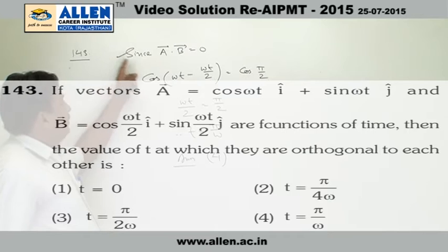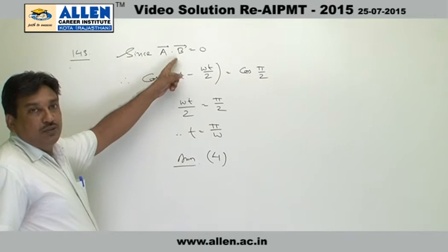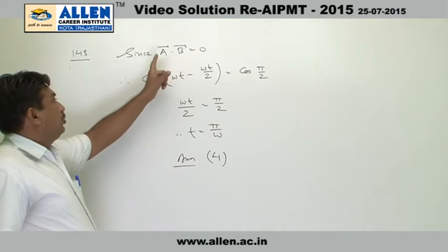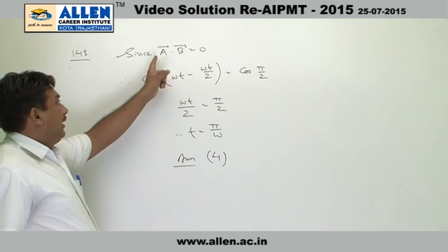In question number 143, two vectors a and b are given. Since both vectors are orthogonal, their dot product will be 0. After taking the dot product, we get cos ωt minus ωt/2.